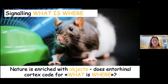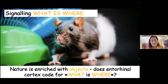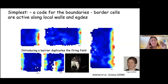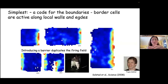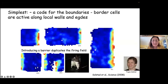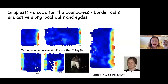We know that nature is enriched with objects. We asked the simple question: does entorhinal cortex code for what is located where? The simplest 'what is where' is the walls of the box we use to test animals. Indeed, we discovered cells that would be active close to one of the walls, and we decided to call these cells border cells.